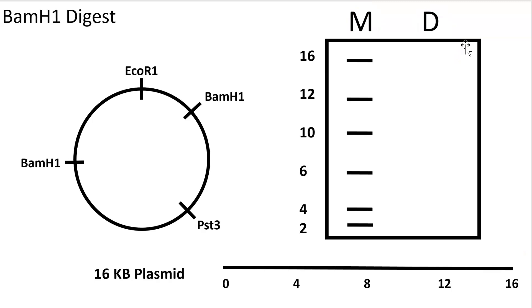Here we have a digest with BamH1. Note from the map that there are two BamH1 restriction sites, here and here. My approach is to figure out predictable fragments. You can see that each quadrant here is 4 KB of DNA. That's 16 divided by 4. So I like to separate it in the following way as a quadrant.